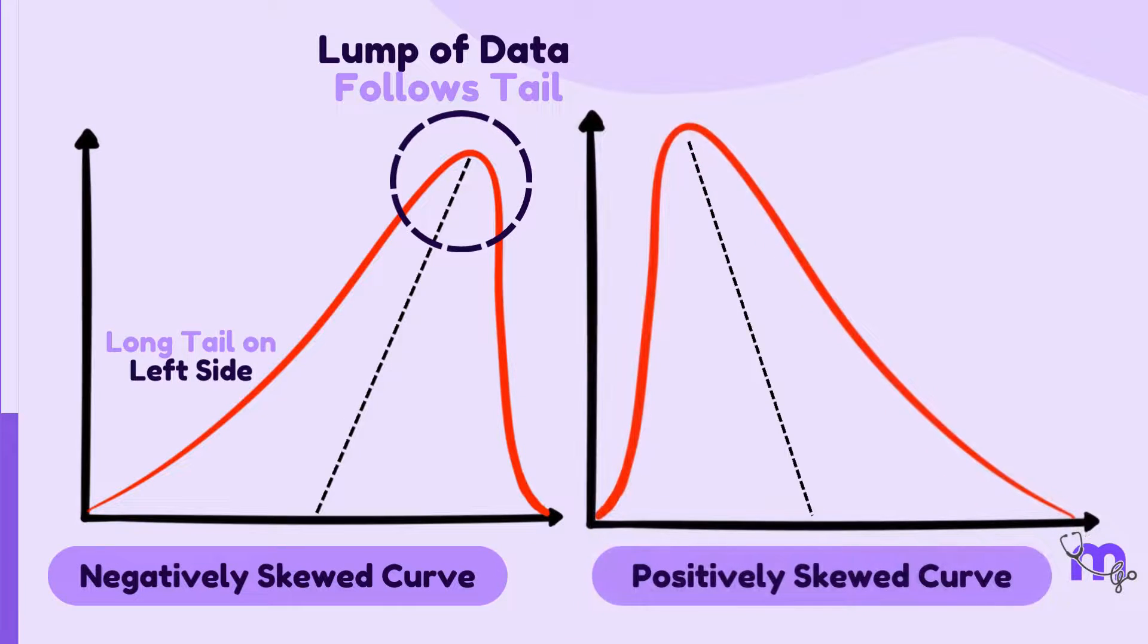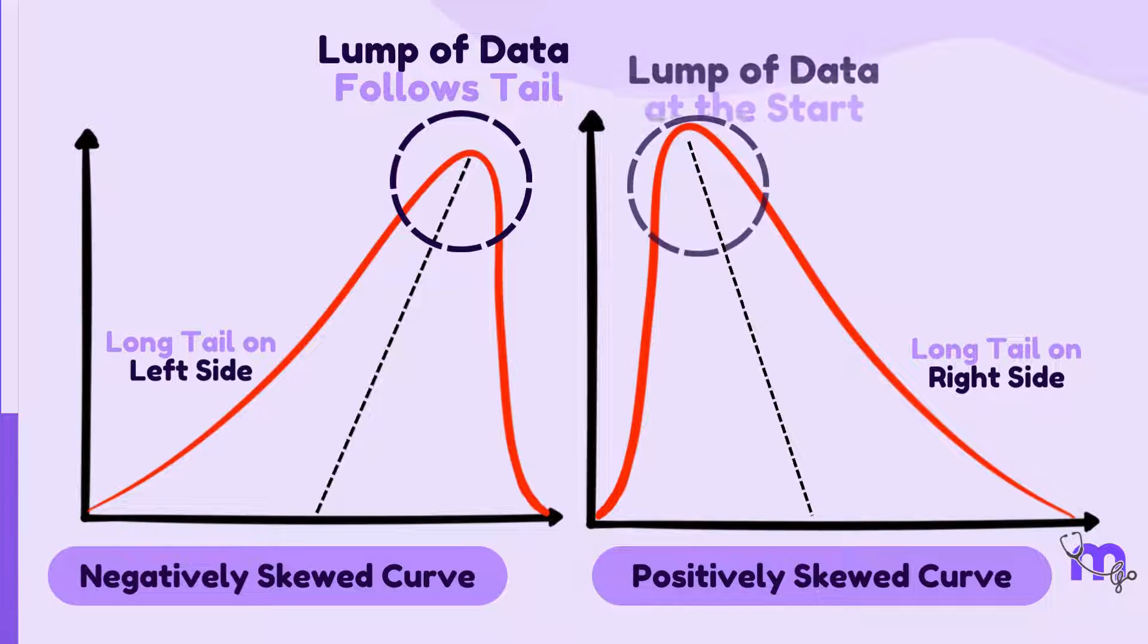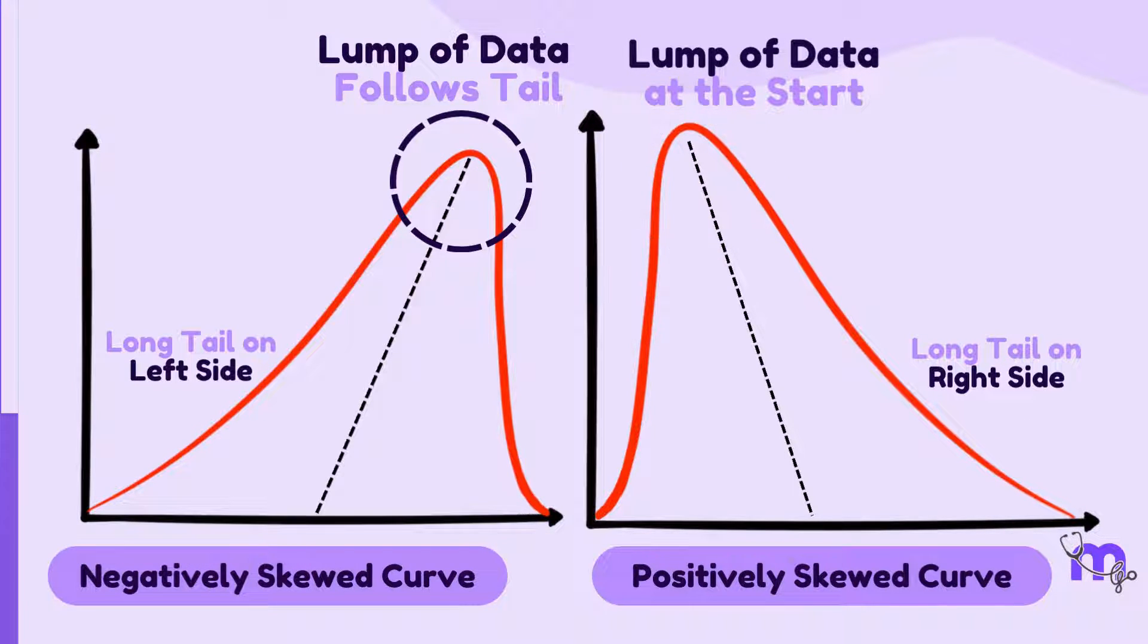Conversely, a positively skewed curve has a longer tail on the right side with most of its data concentrated on the left. This suggests that the distribution is pulled towards lower values and few extremely high values are present.